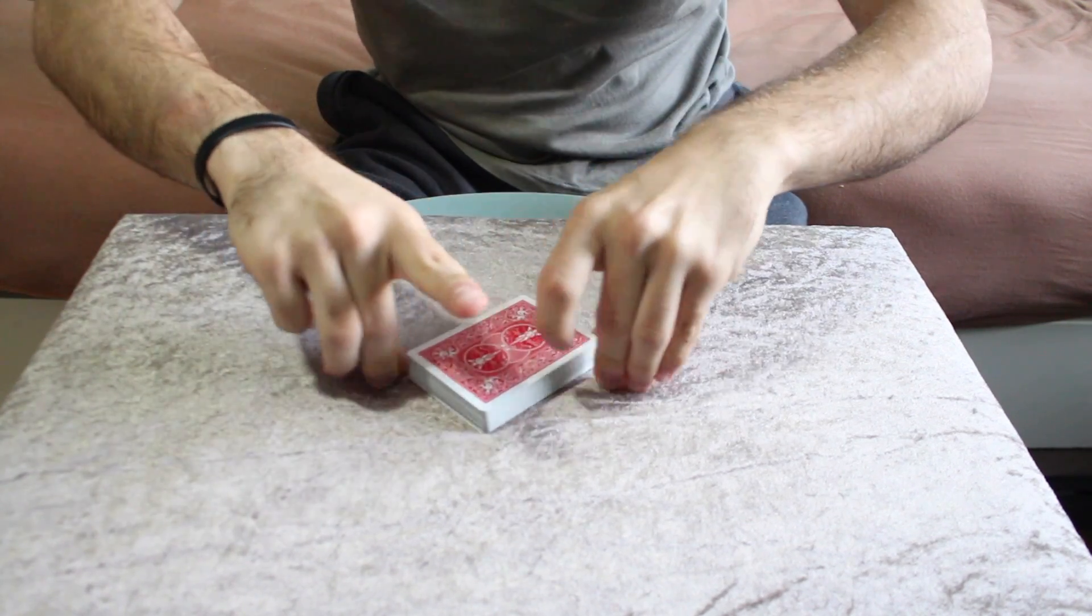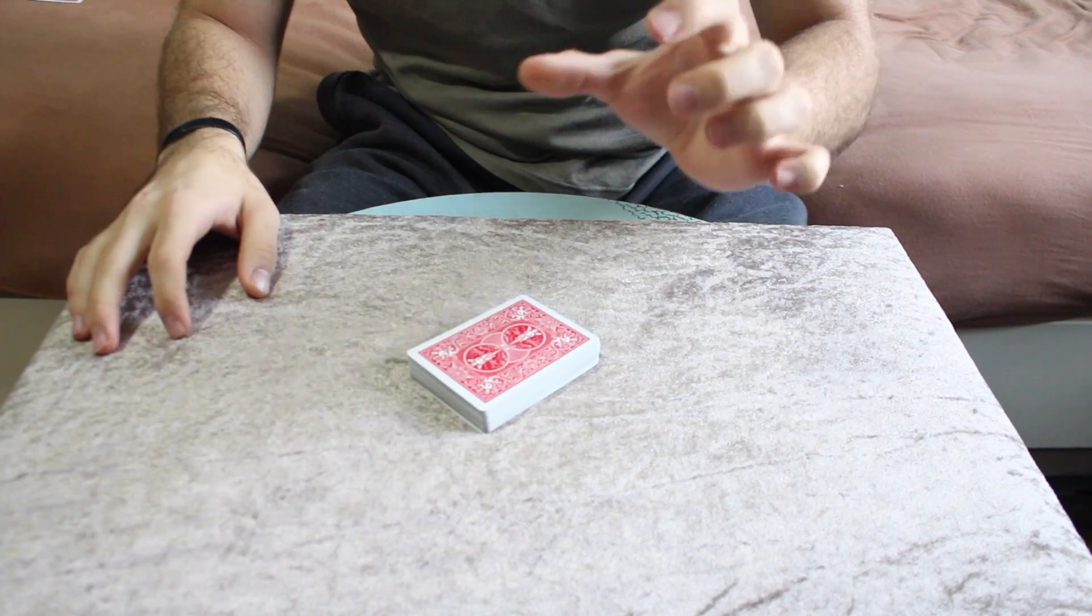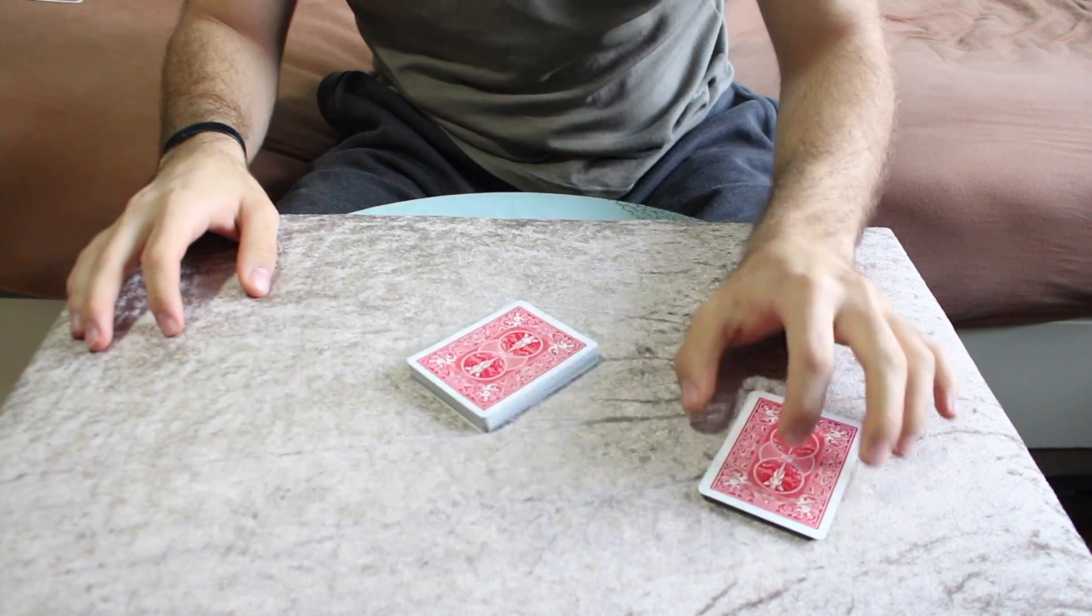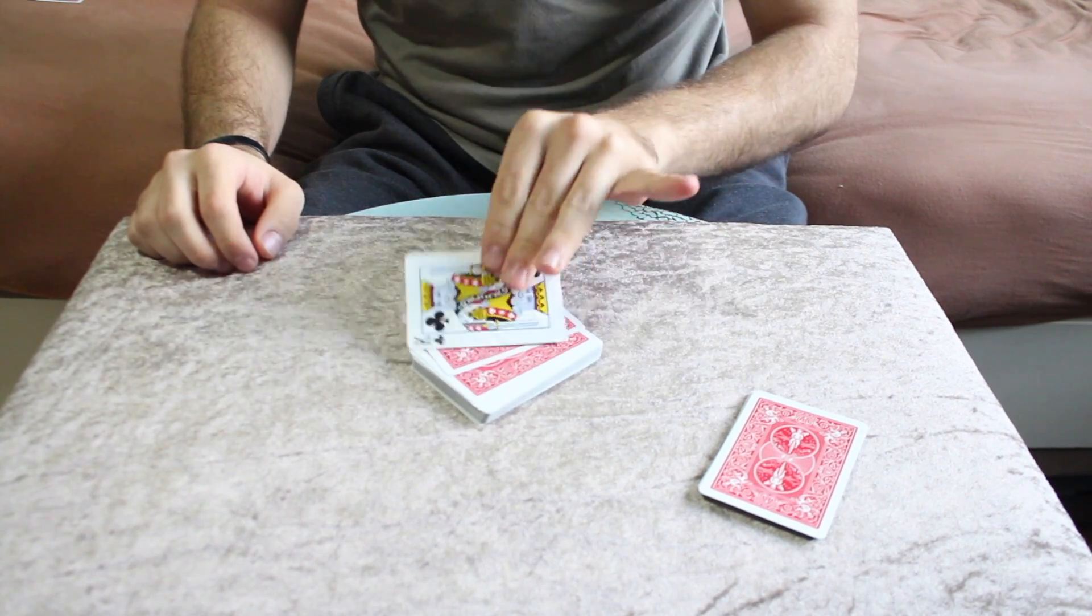Now at this point the magician is really out of control, he has no clue where the card is, but somehow by just feeling its position the magician is able to cut to their card, the king of clubs.